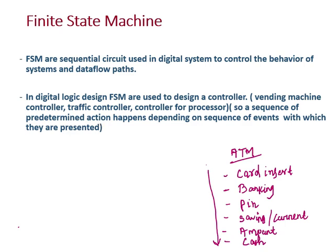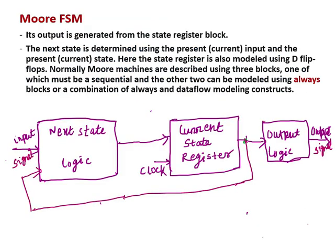We know that there are two types of FSM — finite state machine. One is Mealy and one is Moore state machine. I have already covered the Mealy state machine, so in this lesson I will be covering the Moore FSM.